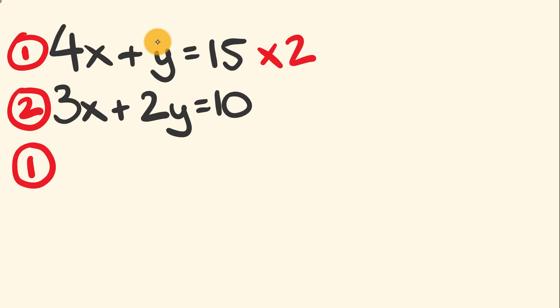We're going to get a brand new equation 1 by multiplying by 2. So 4x times 2 equals 8x, plus y times 2 equals 2y, and this equals 15 times 2, which is 30. We've made the coefficient in front of y the same—we've got 2y in both equations.